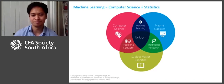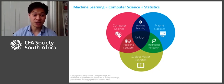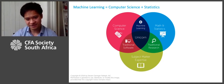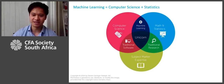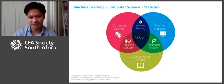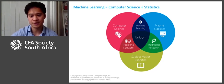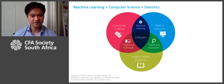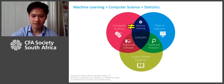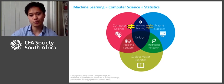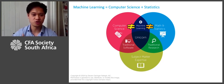To dive right in: machine learning is not a new distinct field — it's the intersection between computer science and statistics. I'm going to go into the main ways it differs from computer science and the main ways it differs from traditional statistics.